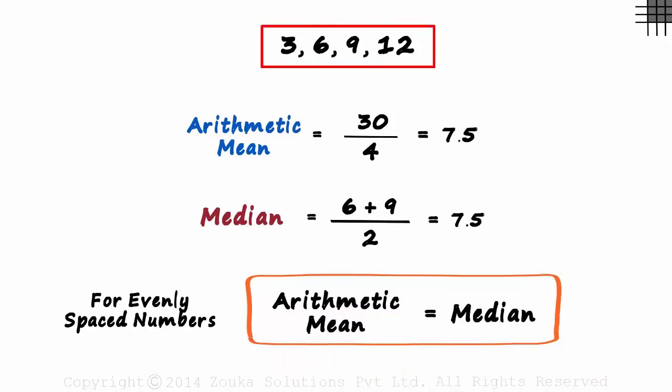For evenly spaced numbers, the arithmetic mean will always be equal to the median. But for evenly spaced numbers, we have a better way to find these two values.